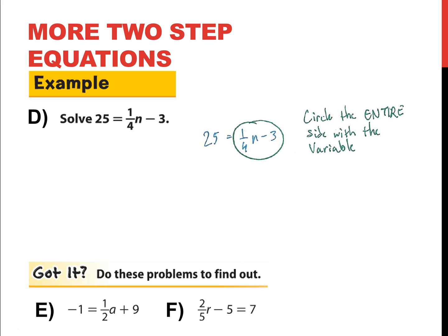Now that I've circled that side, I can focus my thinking and see what number is being added or subtracted inside the circle. And of course, that number is minus 3. And the inverse of subtraction is addition, so I add that to both sides. 28 is equal to 1 fourth times n.